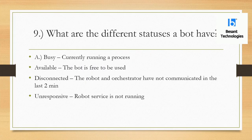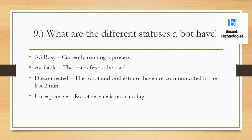What are the different statuses a bot can have? If the bot is running any process, the status in the Orchestrator will show as Busy, indicating a process is currently running on that resource. If the status is Available, the bot is free — no process is executing on it. Disconnected means the robot has lost communication with the Orchestrator for the last two minutes. Unresponsive means the UiPath Robot service in Windows Services is not running, and you have to manually restart the service.